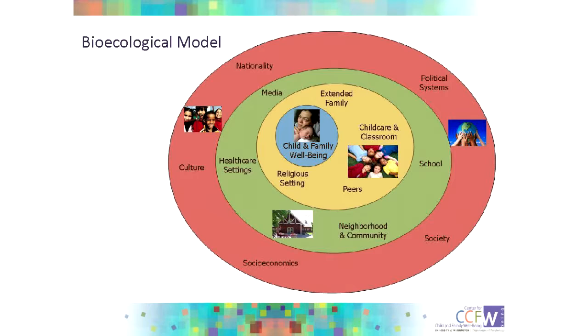I'm sure you're all familiar with the idea of a bioecological model. The idea is that children's development happens in the context of a series of nested settings, with the most pronounced impact on children — especially young children — from those experiences that are proximal to the child: their immediate relationships and contexts. Those are influenced by extended family or school or child care settings, which are influenced by a broader context like neighborhood, school systems, local politics, and broader social macroeconomic societal-level factors.